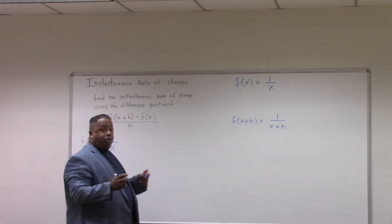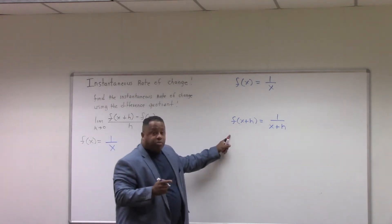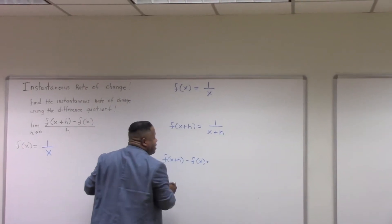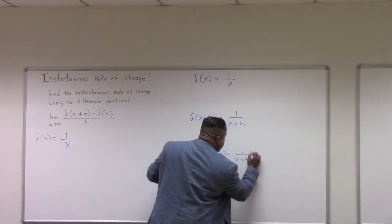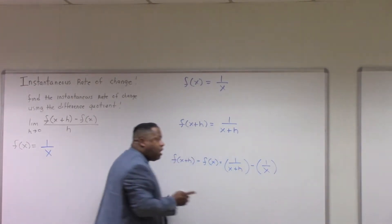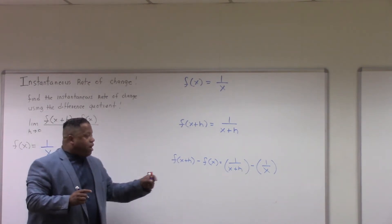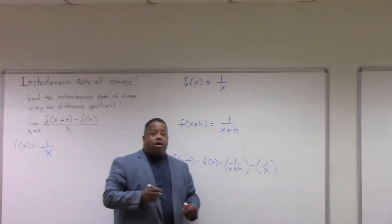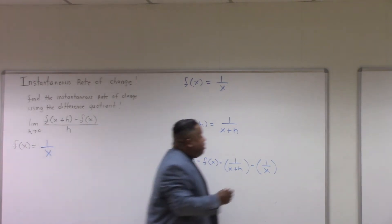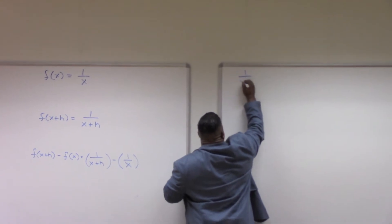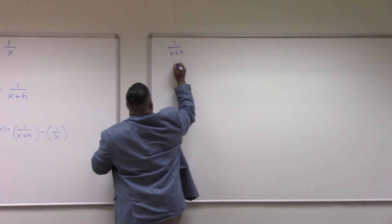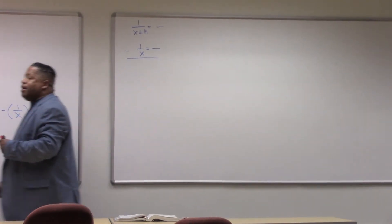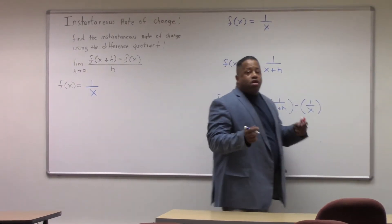We've got the first two steps done: f of x and f of x plus h. Our next step is f of x plus h minus f of x, which is 1 over (x plus h) minus 1 over x. This is where students really struggle with complex fractions involving variables. We must subtract this, so we must find the common denominator — this is subtracting fractions with unlike denominators.